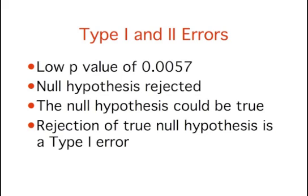If this is the case, then the conclusion that physicians intend to spend less time with obese patients is an error. This type of error is called a Type I error. More generally, a Type I error occurs when a significance test results in the rejection of a true null hypothesis.